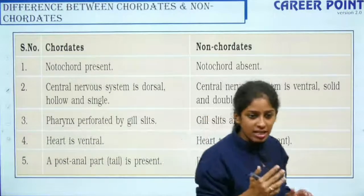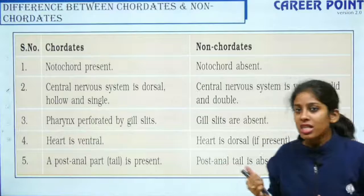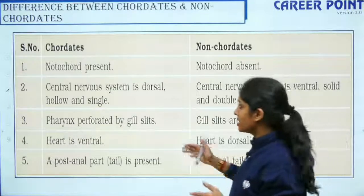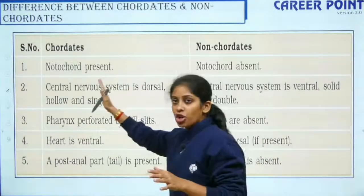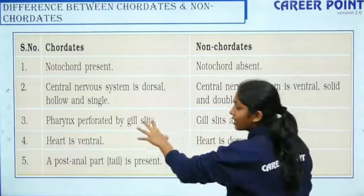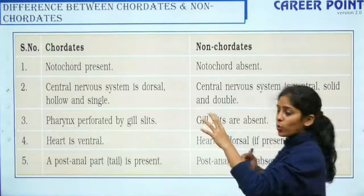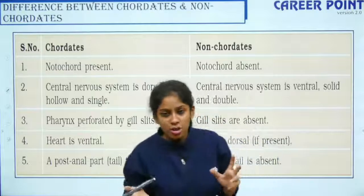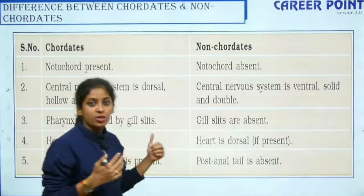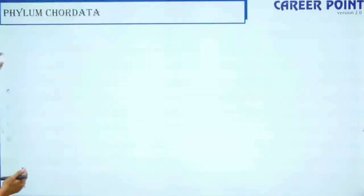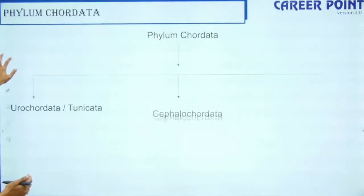Now we move into Chordata. The difference between chordates and non-chordates as given in your NCERT: notochord is present in chordates and absent in non-chordates; the heart in chordates is ventral while in non-chordates it is dorsal; a post-anal tail is present in chordates and absent in non-chordates.